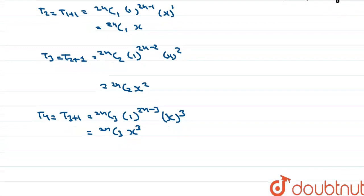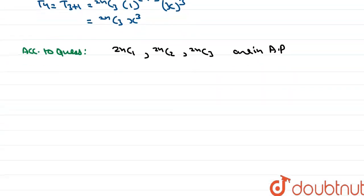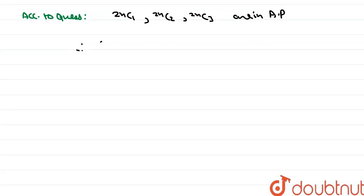They are saying the coefficients of the second, third and fourth terms are in AP. So according to the question, 2nC1, 2nC2, and 2nC3 are in AP. Therefore, 2 × 2nC2 = 2nC1 + 2nC3, which we write as 2nC1 + 2nC3 = 2 × 2nC2.